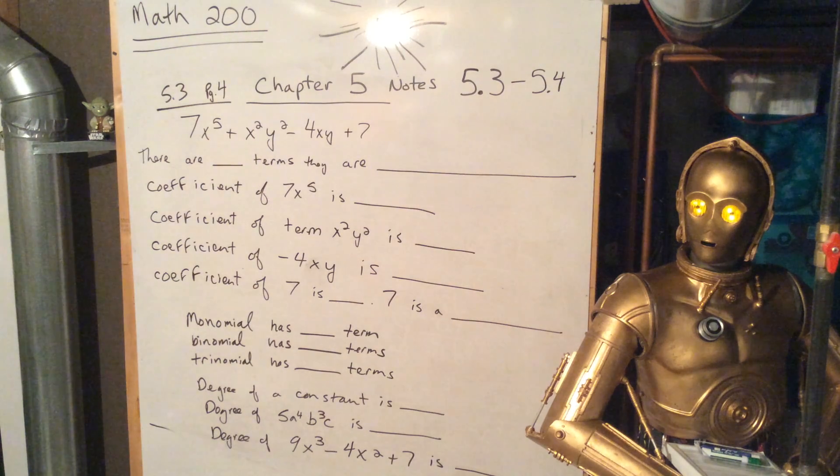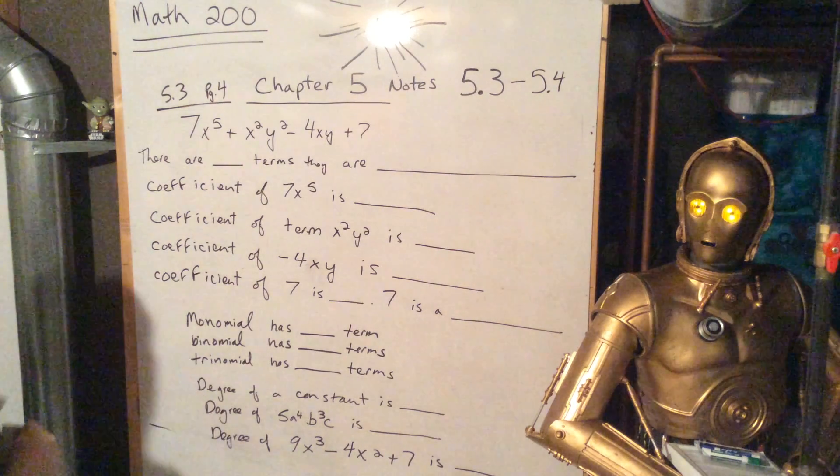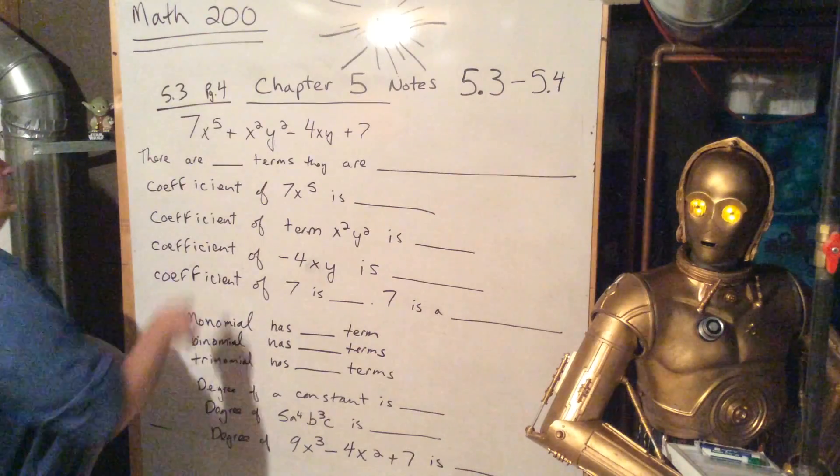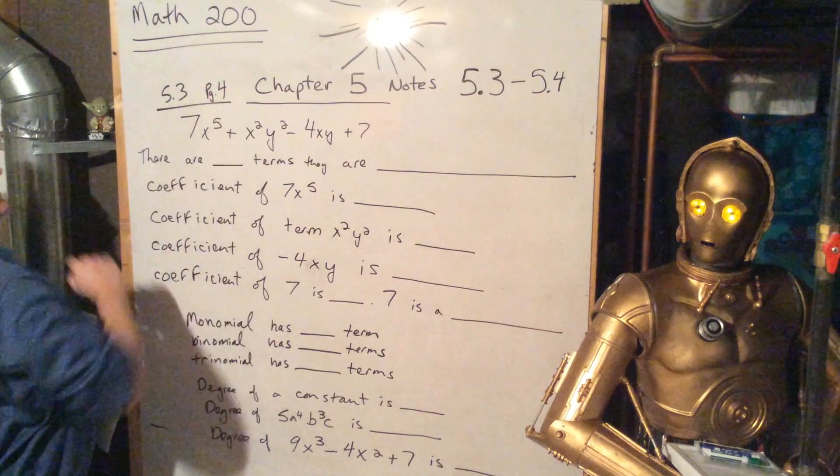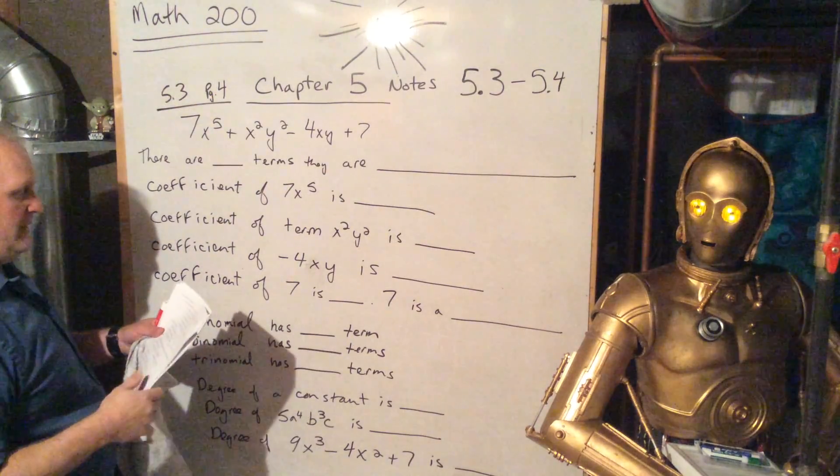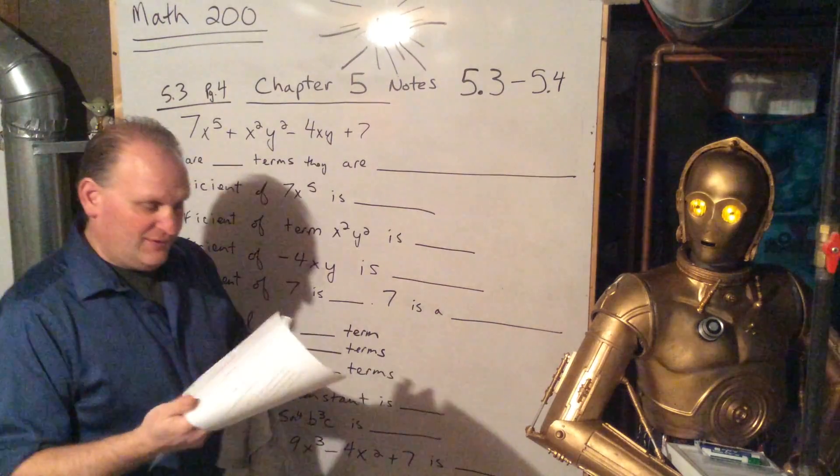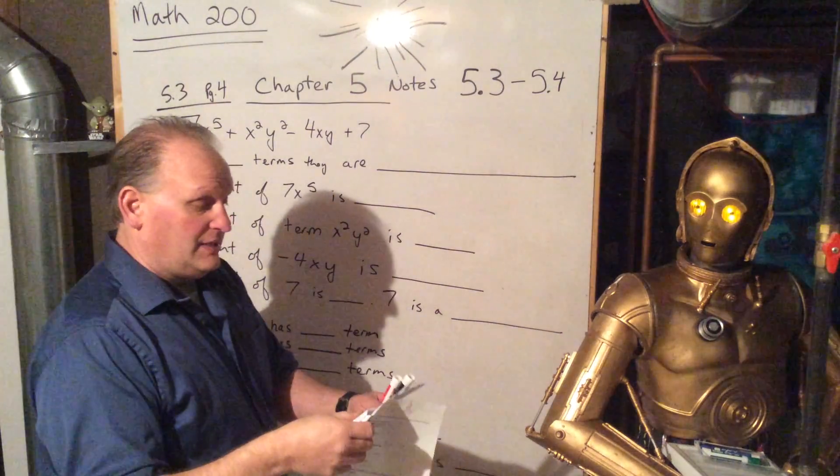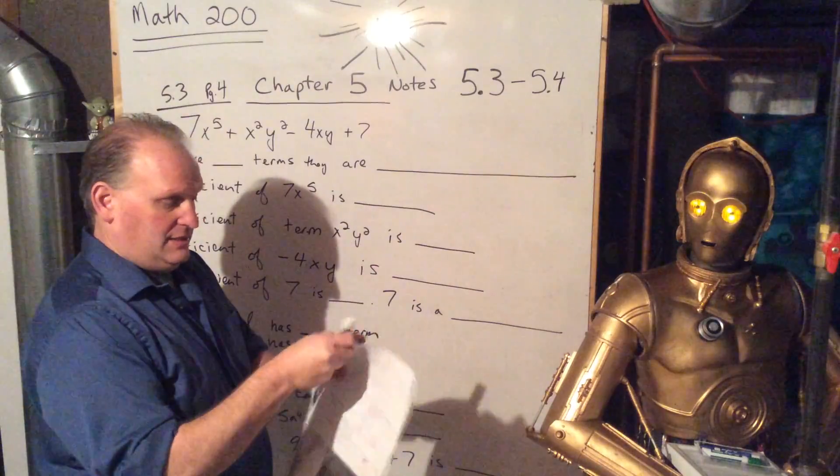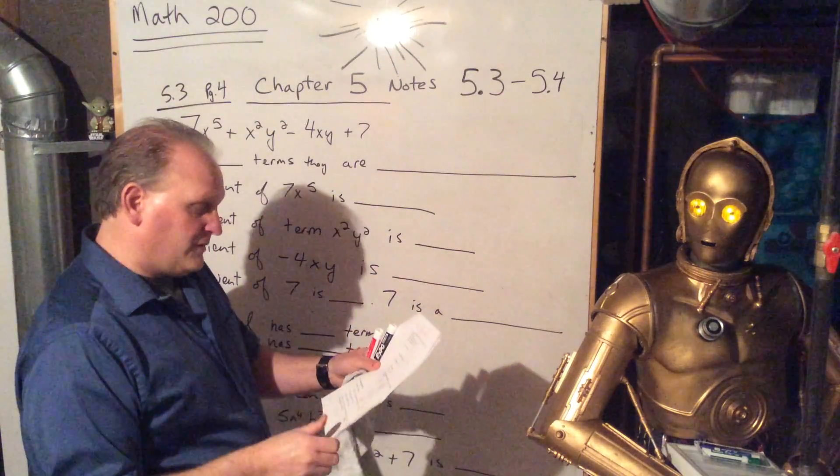Okay, this is Math 300. We are doing the note packet for Chapter 5. We're looking at 5.3, page 4, the fourth page right on the tippy top. And we're going to cover 5.3 and 5.4 in this video. So let's take a look at 5.3.